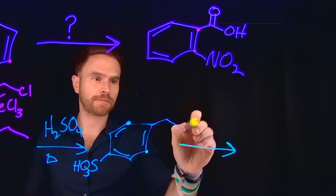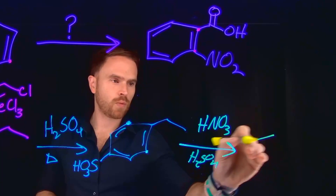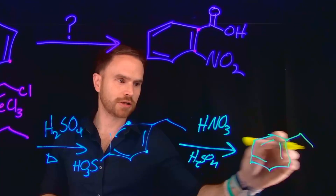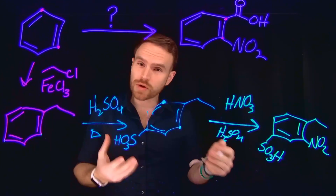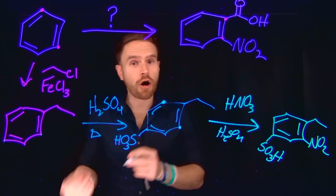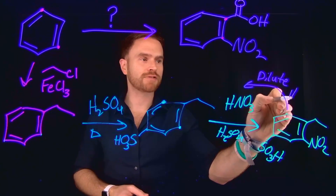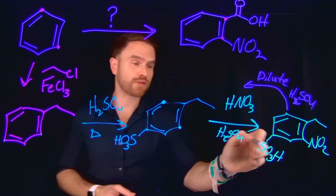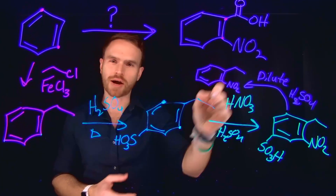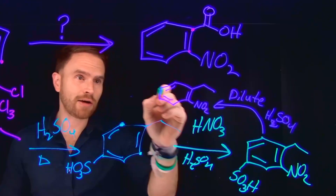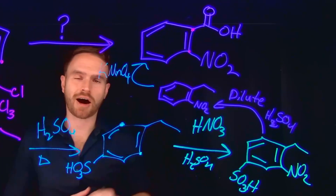Now we can do the nitration, taking nitric acid in the presence of H2SO4, to nitrate and add the nitro group at that directed position. This gives us most of our product, except we now need to remove the blocking sulfonate group. This sulfonate was a great blocking group because it can be put on and also taken off — we can remove it by adding a dilute amount of sulfuric acid, giving us the benzene derivative with just the alkyl chain and nitro group. Then we oxidize the alkyl group to a carboxylic acid using potassium permanganate.